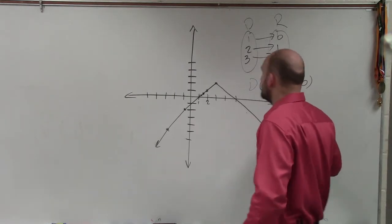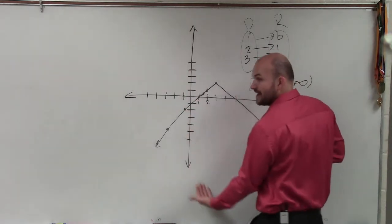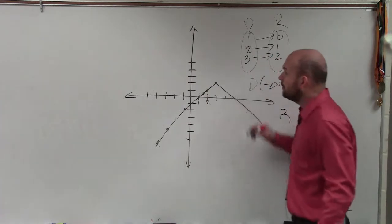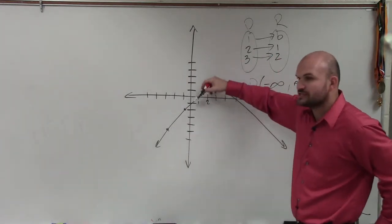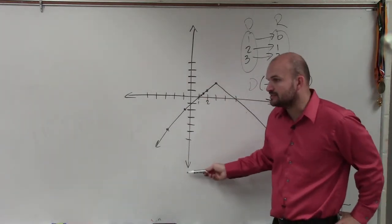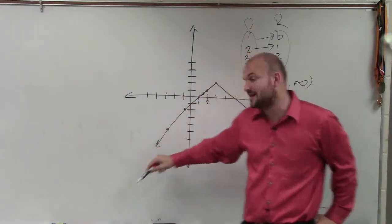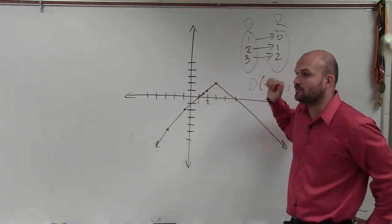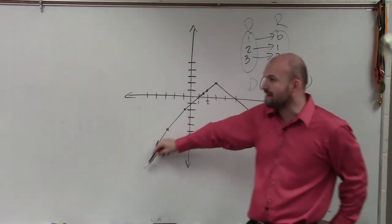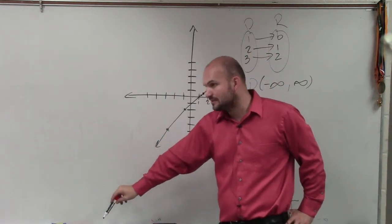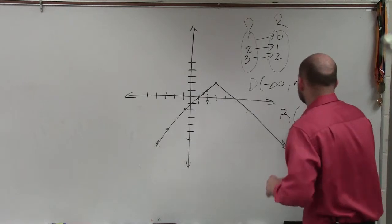But now let's look at range. Range is going to be the set of all y values going up and down. So how low does this graph go? What is the lowest y value? It's going to keep on going, right? So if I say, is there a y value for y equals negative 10 million, do you think this graph is going to continue down to negative 10 million? Yeah. So my range goes from negative infinity.